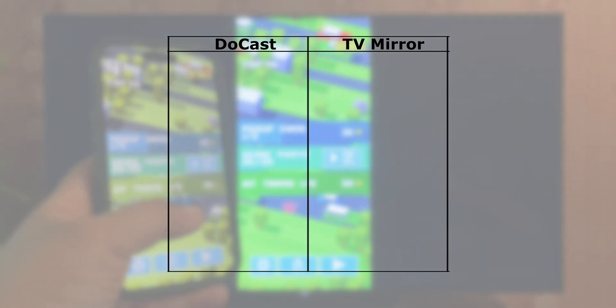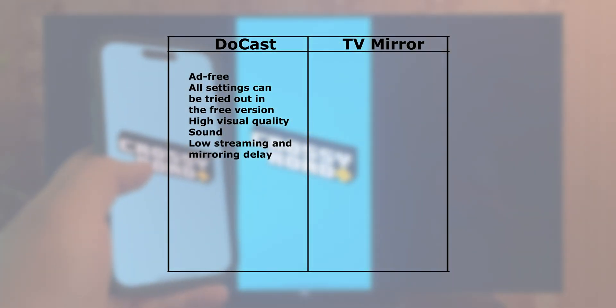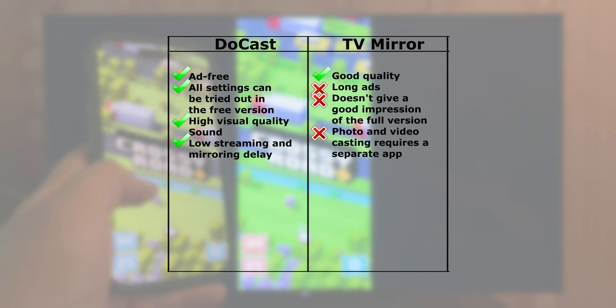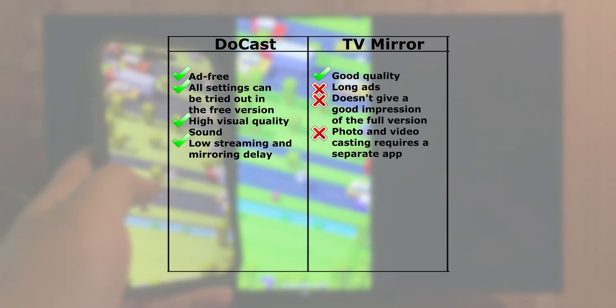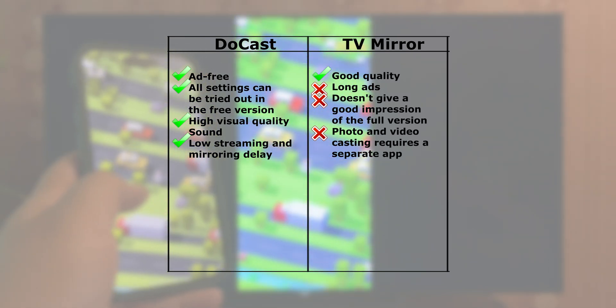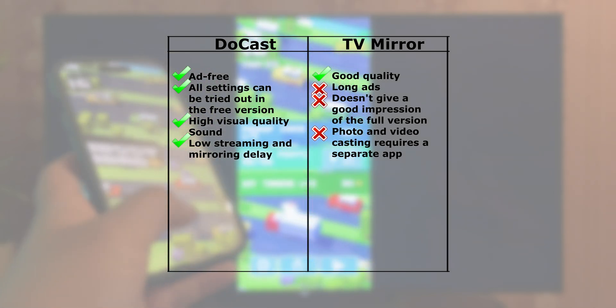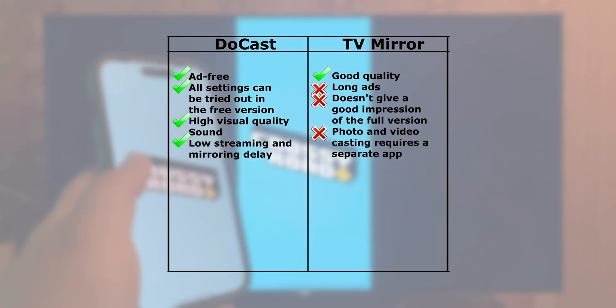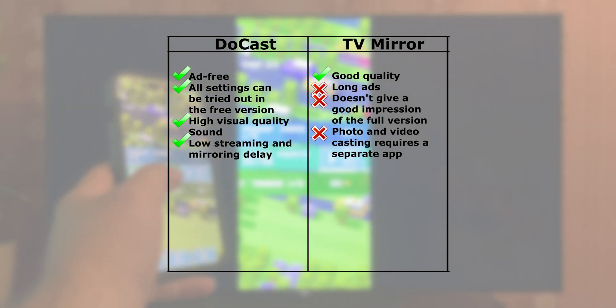Ducast has some significant advantages over TV Mirror. Its free version demonstrated all the benefits of the app and didn't annoy me with ads. The difference in visual quality and latency was obvious. And I didn't get to try sound in TV Mirror — that's a massive downside. What if I bought the full version and it didn't work? Shady. Overall, Ducast wins this round.